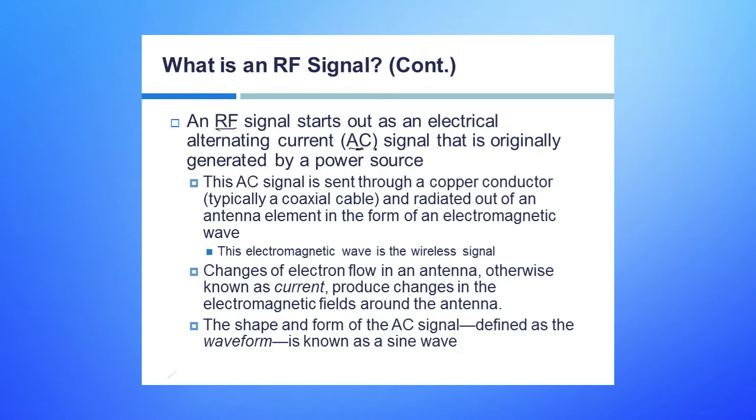The reason it's AC is because it does alternate. It has the positive and the negative, unlike DC, which is direct current, which we wouldn't see any change. So we need a type of current that is able to go from positive to negative.